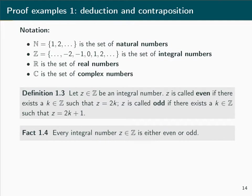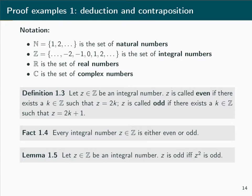A basic fact we will not prove and take for granted is Fact 1.4: every integer z in Z must be either even or odd. What we will prove now is Lemma 1.5, which states that for any integer z in Z, z is odd if and only if z² is odd. The purpose is to demonstrate different proof concepts rather than to use this result frequently in the course — the goal is to really study the proof concepts themselves.